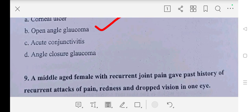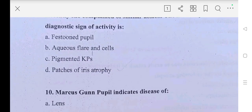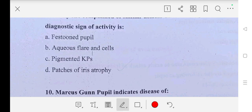Question number nine: a middle-aged female with recurrent joint pain, past history of recurrent attacks of pain, redness, and dropped vision in one eye. Recently she complained of a similar attack. The most important diagnostic sign of activity is — A part: festooned pupil, B part: aqueous flare and cells, C part: pigmented KPs, D part: patches of iris atrophy. So our answer is B part, aqueous flare and cells.